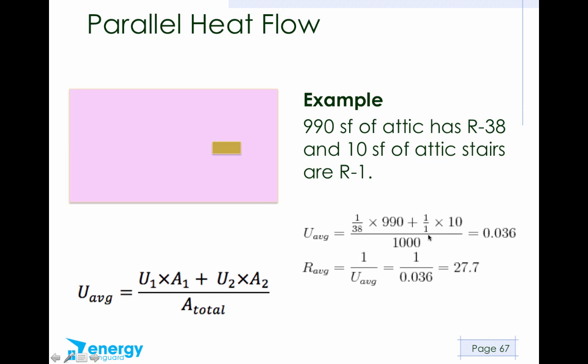So 990 divided by 38 gives us the first part. Then we do this part. 1 over 1 is 1. 1 times 10 is 10. So we've got 10 here. When we do 990 divided by 38, we get 26, and 26 plus 10 is 36. 36 divided by 1,000 is 0.036. So that is our average U value. But if we want to know what the average R value is, we just do 1 over U average. So 1 divided by 0.036, you get 27.7. The takeaway here is that 1% uninsulated area can have a huge effect on your heat flow, because that knocks your R value of that R38 attic down from R38 to R28.